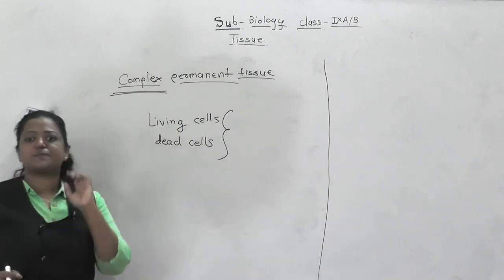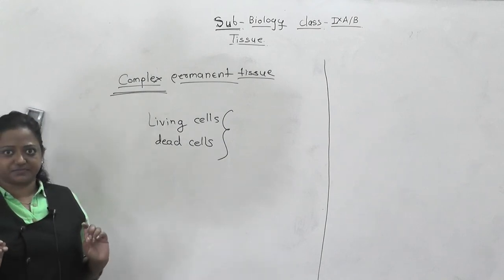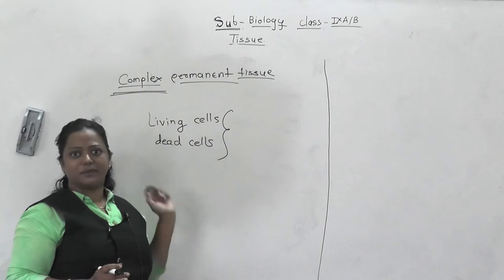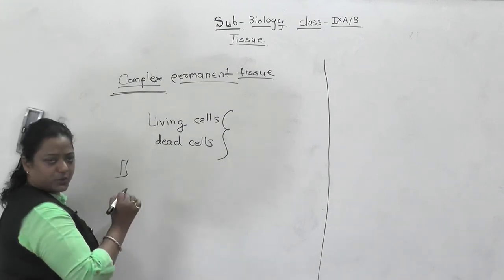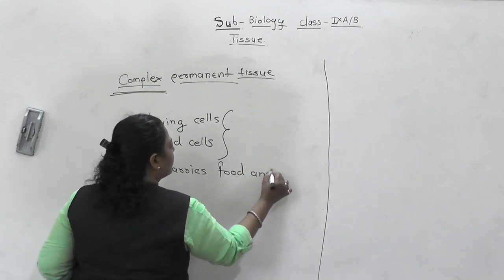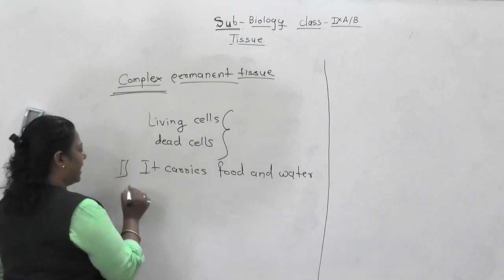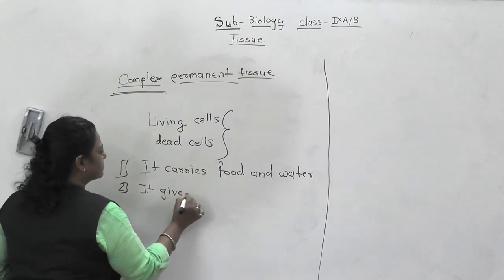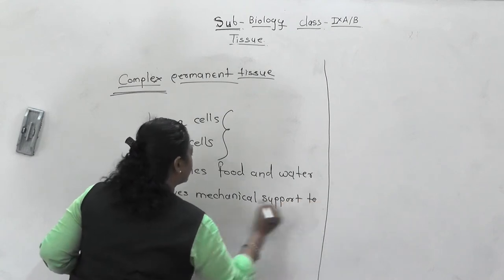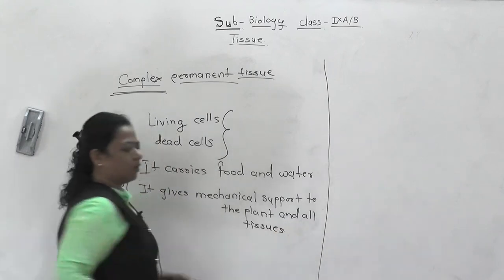What is the actual function of complex permanent tissue? This complex permanent tissue is conducting water and food, and giving mechanical support to the plant. So the specific function of complex permanent tissue is: it carries food and water, and it gives mechanical support to the plant and all its tissues.